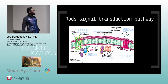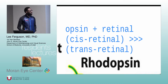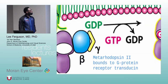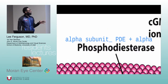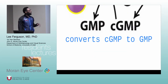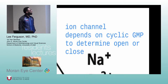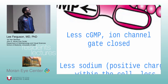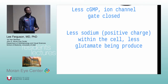This is the rod signal transduction pathway. The opsin plus retinal forms cis-retinal, then light enters and transforms it into the trans-retinal form. Metarhodopsin 2 then binds to the G protein receptor transducin, which forms a complex with the phosphodiesterase unit. From there, cyclic GMP is converted to GMP, which closes the sodium ion channel. Less cGMP leads to its closure, leading to hyperpolarization, and so less glutamate is being produced as a result.